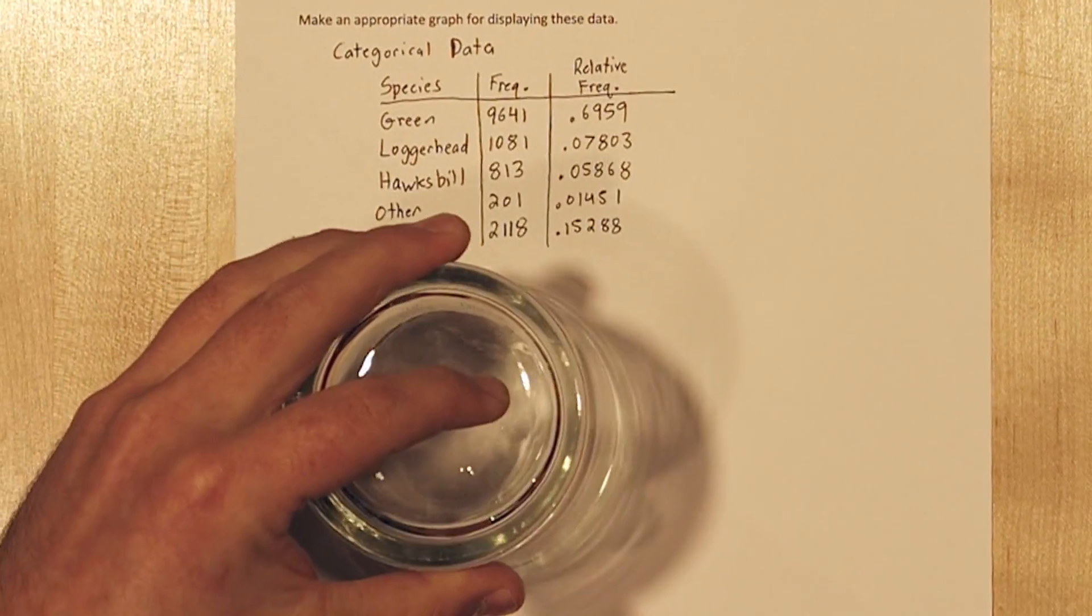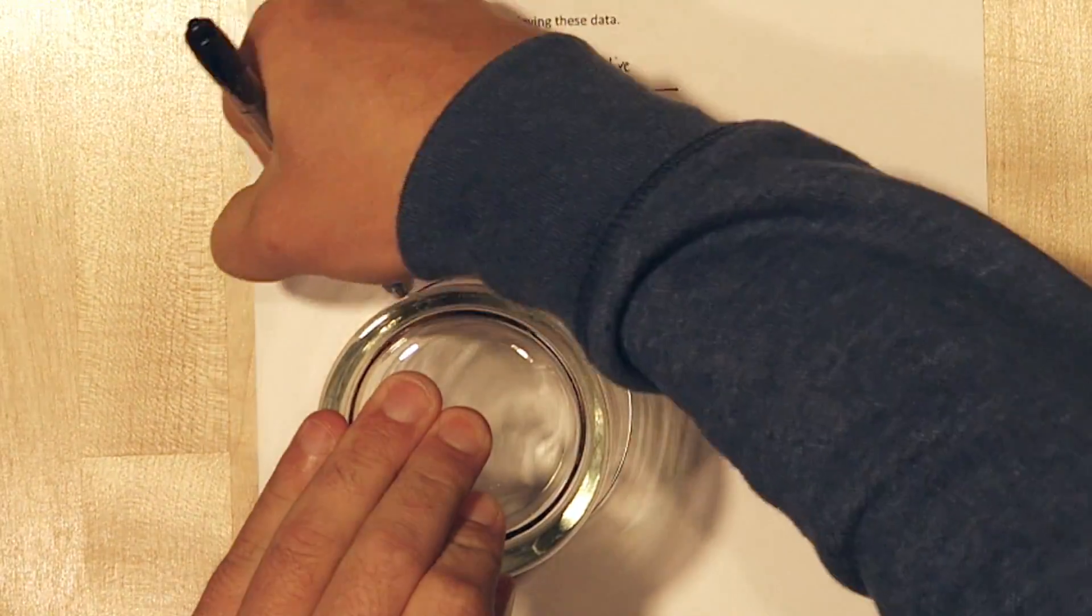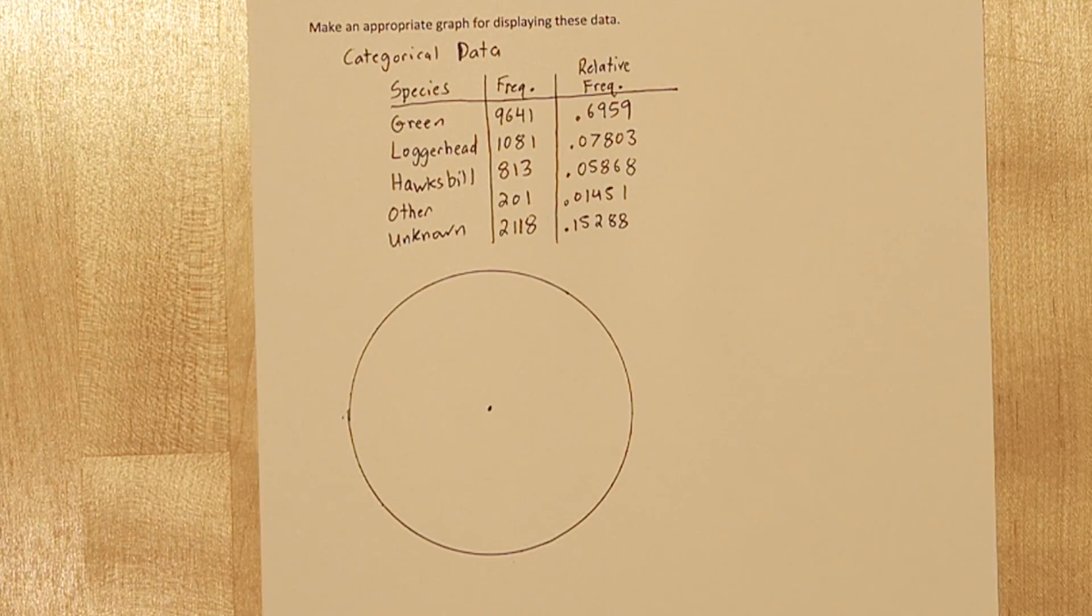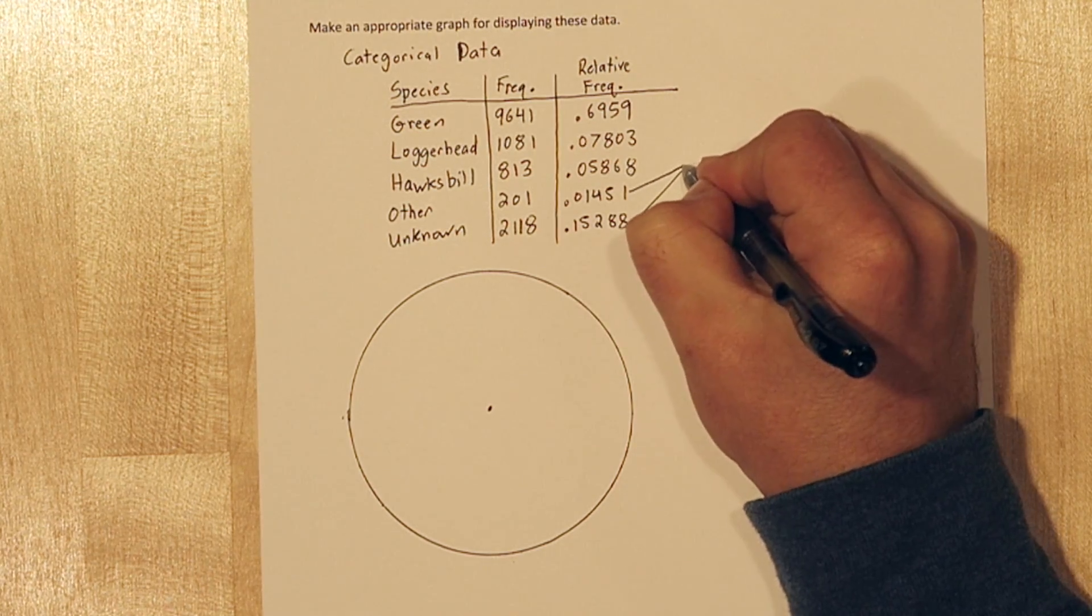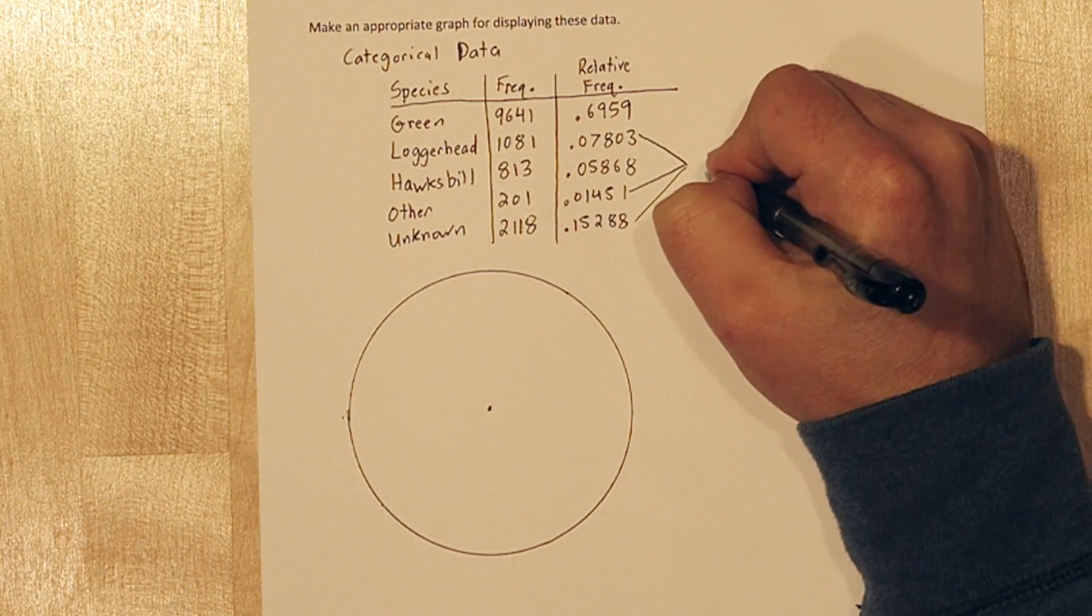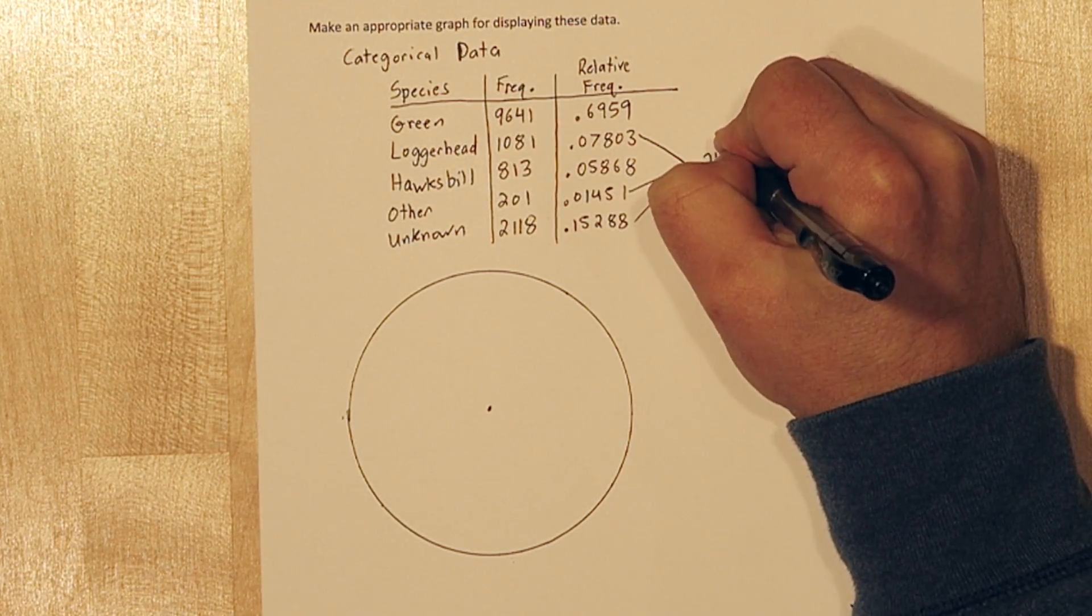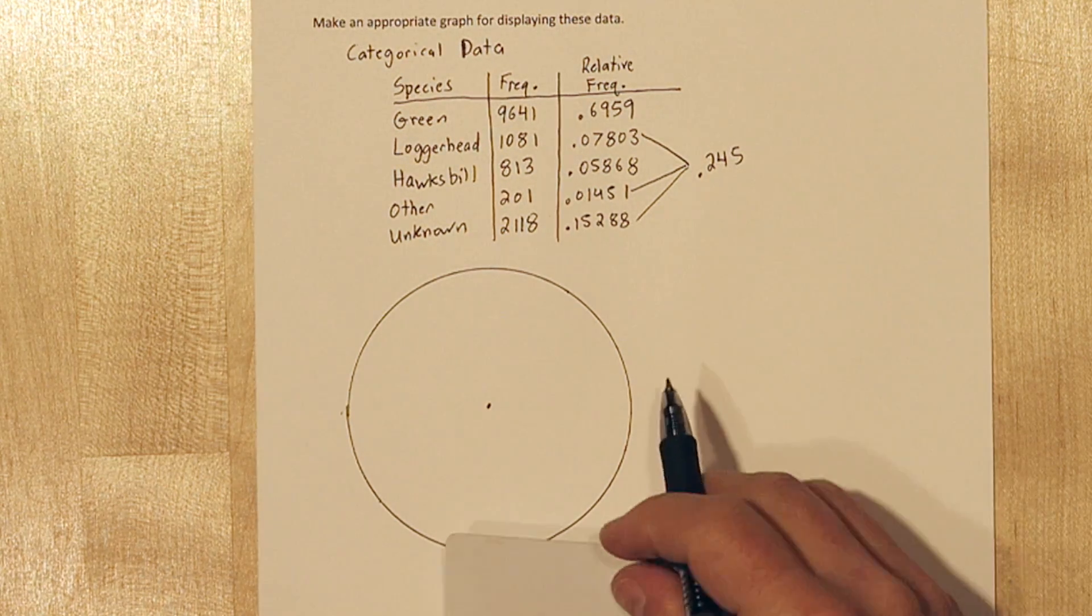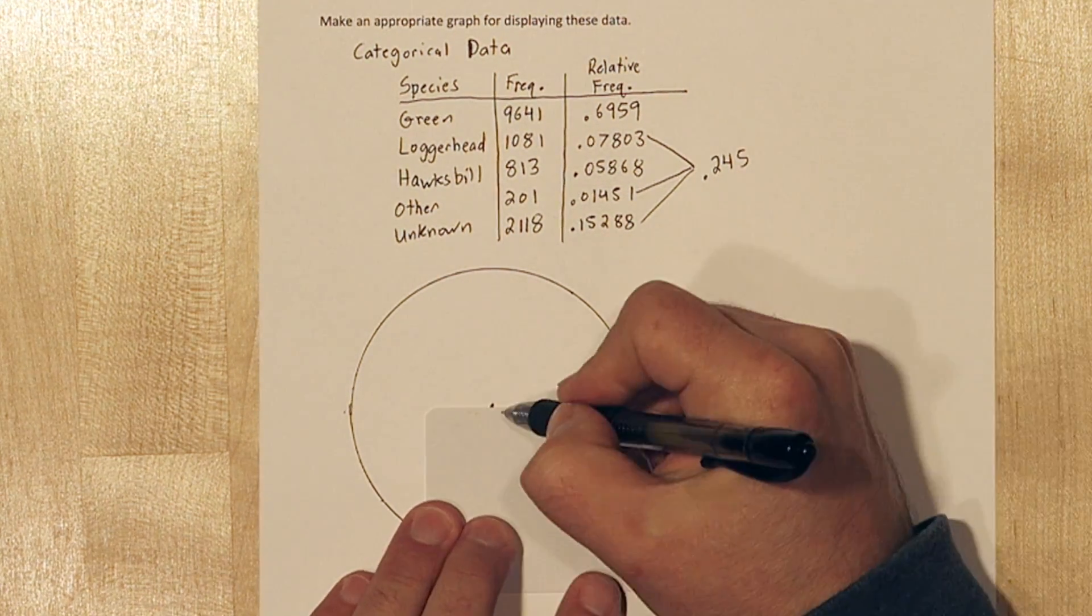So let's make a pie chart. Try to locate the center of your circle. So one trick to making a pie chart is try to group values into sums that are close to 50%, or 75%, or 25%. Like for example, these three values add up to really close to 25%. So I know together those three are going to take up about a quarter of my pie chart.